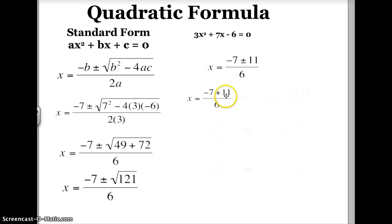The first one is -7 plus 11. -7 plus 11 is 4. So I get x equals 4 divided by 6, and then I can simplify that down to x equals 2/3. So one of my x-intercepts is 2/3.